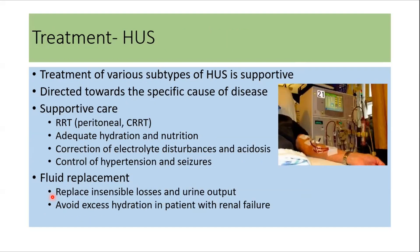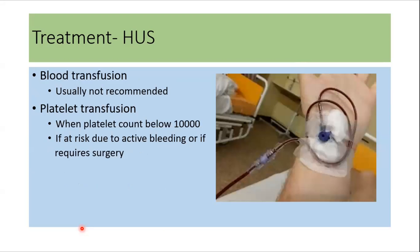Treatment of the various subtypes of HUS is similar and supportive. Supportive care includes renal replacement therapy, which can be hemodialysis, peritoneal dialysis, or continuous renal replacement therapy. Adequate hydration and nutrition is very important. Correction of electrolyte disturbances and acidosis is also important. Control of hypertension and seizures are integral parts of management. Fluid replacement is important to replace insensible losses and urine output, while excess hydration in patients with renal failure is avoided. Blood transfusion is usually not recommended unless there is absolute indication. Platelet transfusion is usually not done unless platelet count is below 10,000, or if the patient has active bleeding or requires surgery.